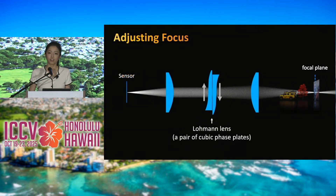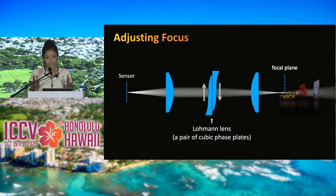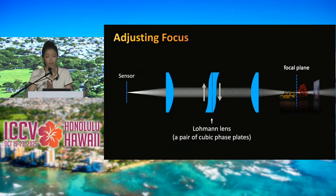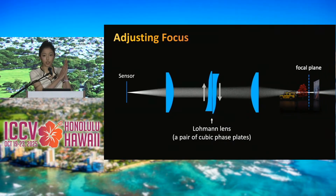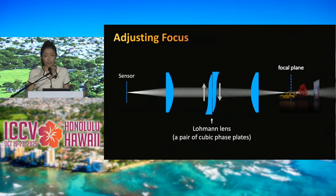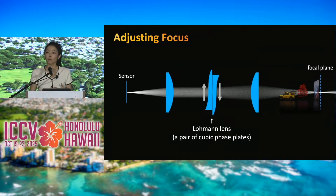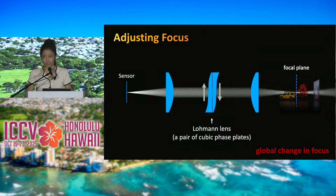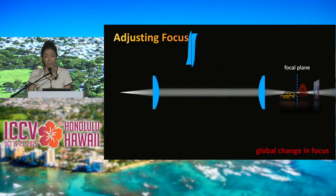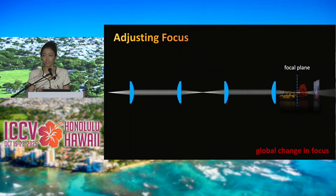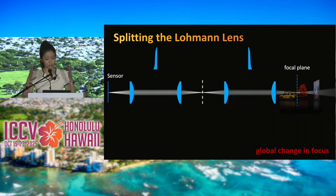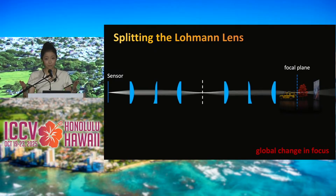Our solution starts with an optical design that uses a Lohmann lens, which is a device that allows us to adjust focus by laterally shifting two cubic phase plates. However, this produces a global change in focus. To enable spatially varying focus control, we create an optical relay that equivalently allows us to adjust focus, but with the two components of the Lohmann lens split and placed into different parts of the optical system.